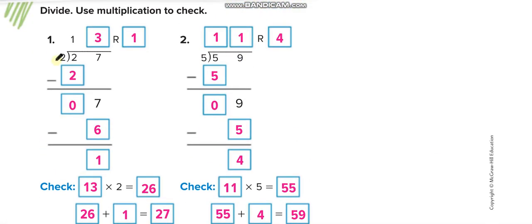Here, 2 times 1 equals 2. 2 minus 2 equals 0. Bring the 7 down. 2 times what is equal to 7 or less? 2 times 3 equals 6. 7 minus 6 equals 1. Remainder 1. To check, multiply the quotient with the divisor, 13 times 2 equals 26, plus the remainder 1 equals 27, which is equal to the dividend.